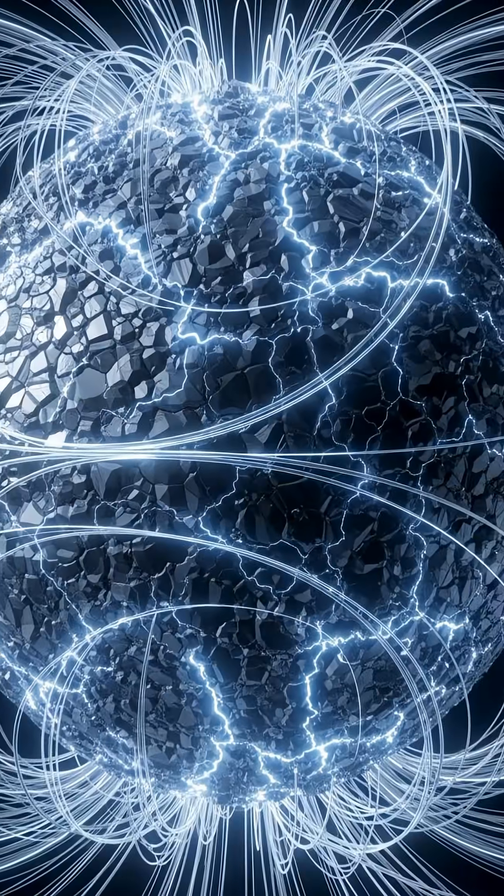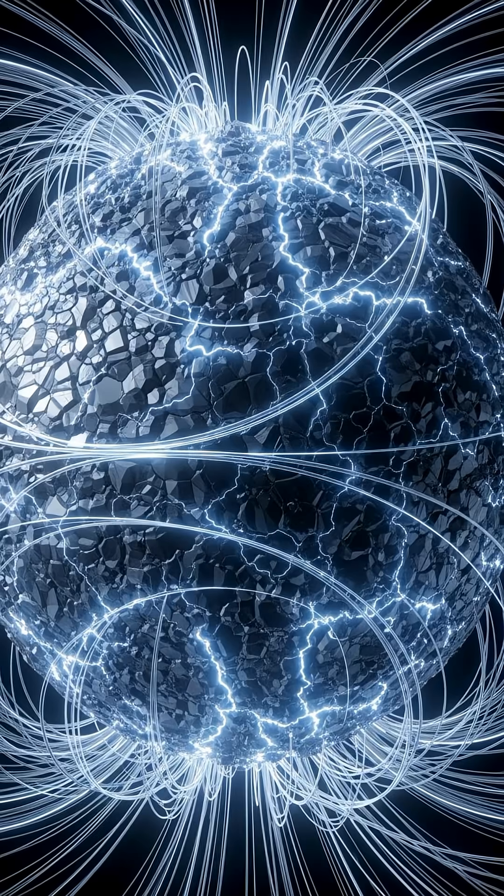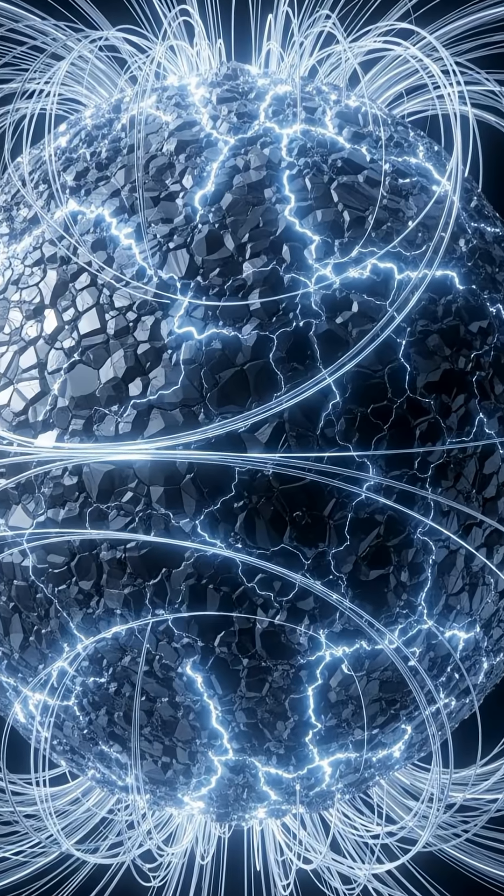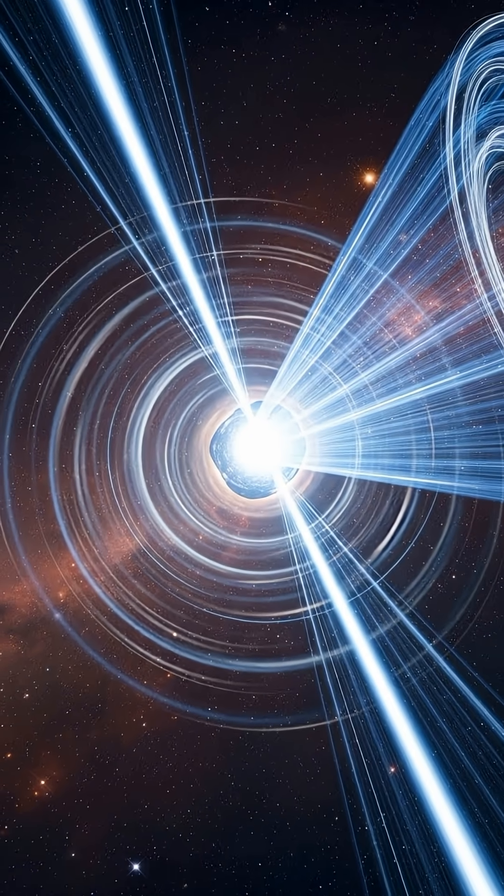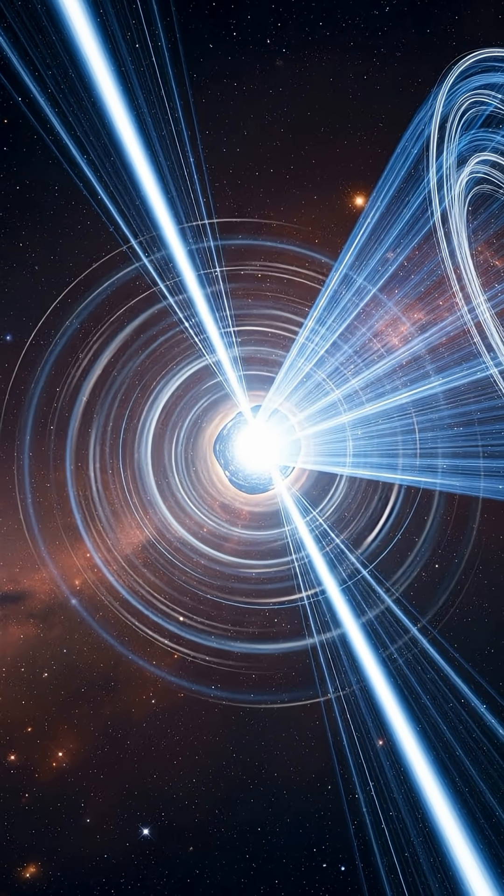Yet containing more mass than our entire sun. Spinning at nearly 24% the speed of light at its equator, this neutron star defies everything we know about physics, with gravity so intense that a sugar cube-sized piece would weigh a billion tons on Earth.